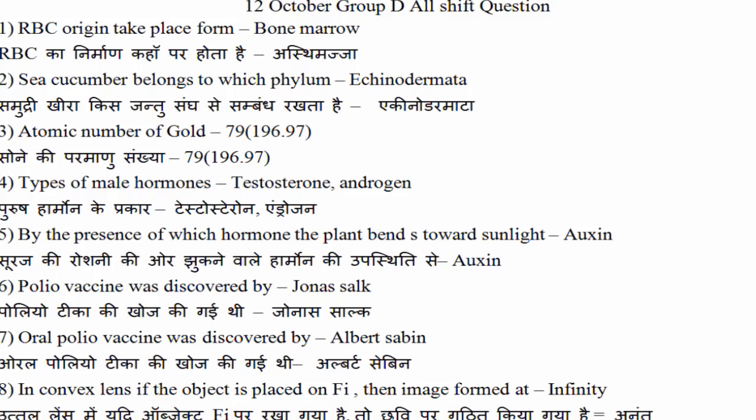5th question: किस hormone की वजह से पौधे या फूल सूरज की तरफ झुकते हैं. तो यहाँ पे याद रखेगा कि Auxin जो है वो हमारा correct answer रहेगा.